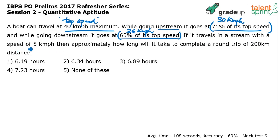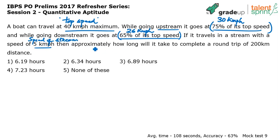This boat is traveling in a stream with a speed of 5 kilometers per hour, which means the stream has a speed of 5 kilometers per hour — the speed of the river, speed of the water, speed of the current, the flow — 5 kilometers per hour.